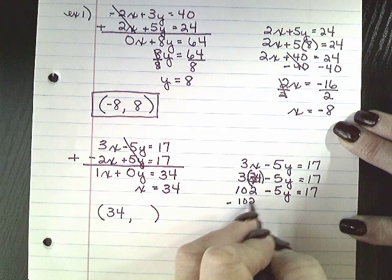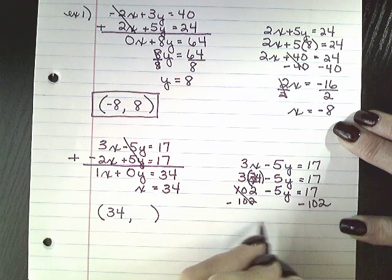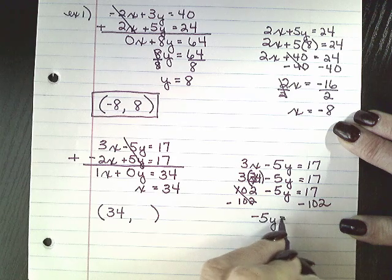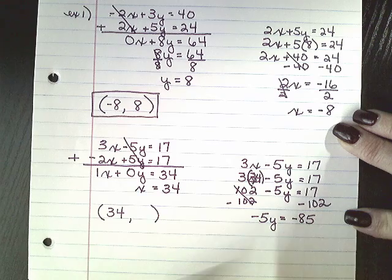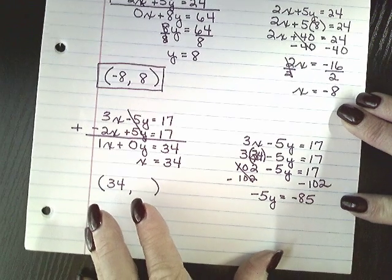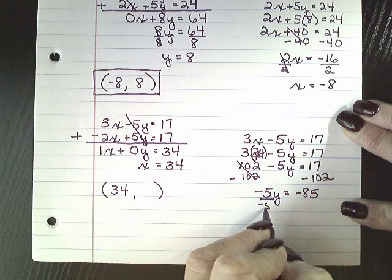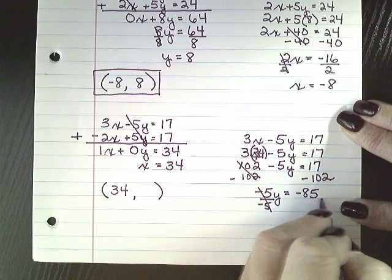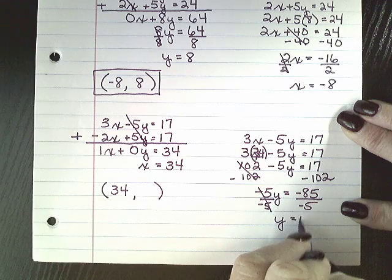3 times 34 is 102 minus 5y equals 17. Now, two-step equation. Add a negative 102 to both sides and we get negative 5y is equal to negative 85. Now, don't forget, you need to divide both sides by negative 5. Do not leave that negative sign behind. So y is equal to 17.